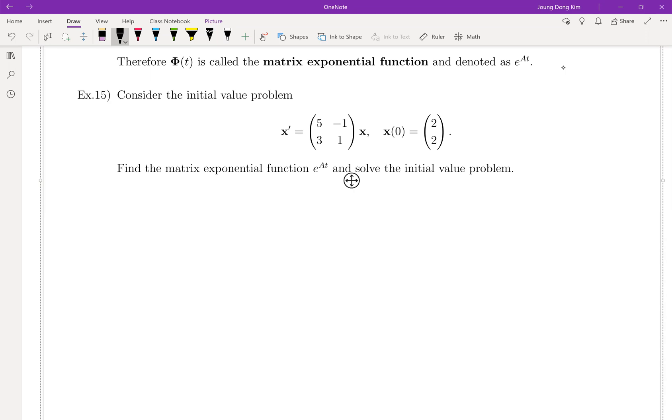In the previous video, we found the fundamental vector functions. Let me write that one. Here we go. It was, let's denote by u. u^(1) equal to e^t times the eigenvector. And u^(2) is e^(4t) times its eigenvector. These came from the previous video.